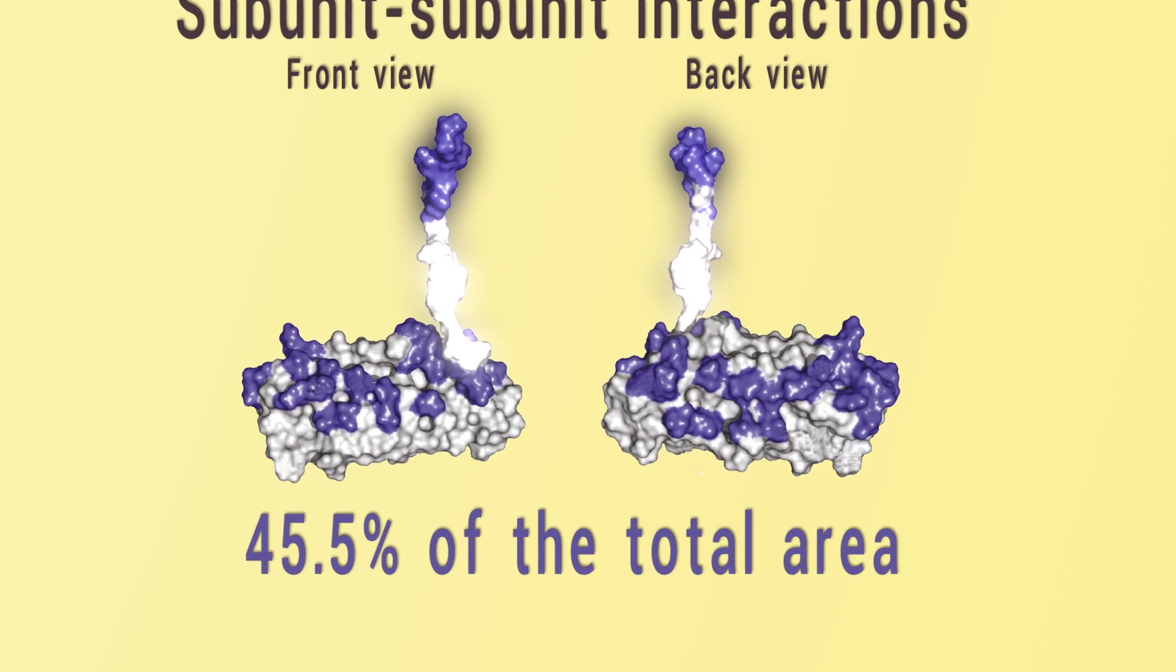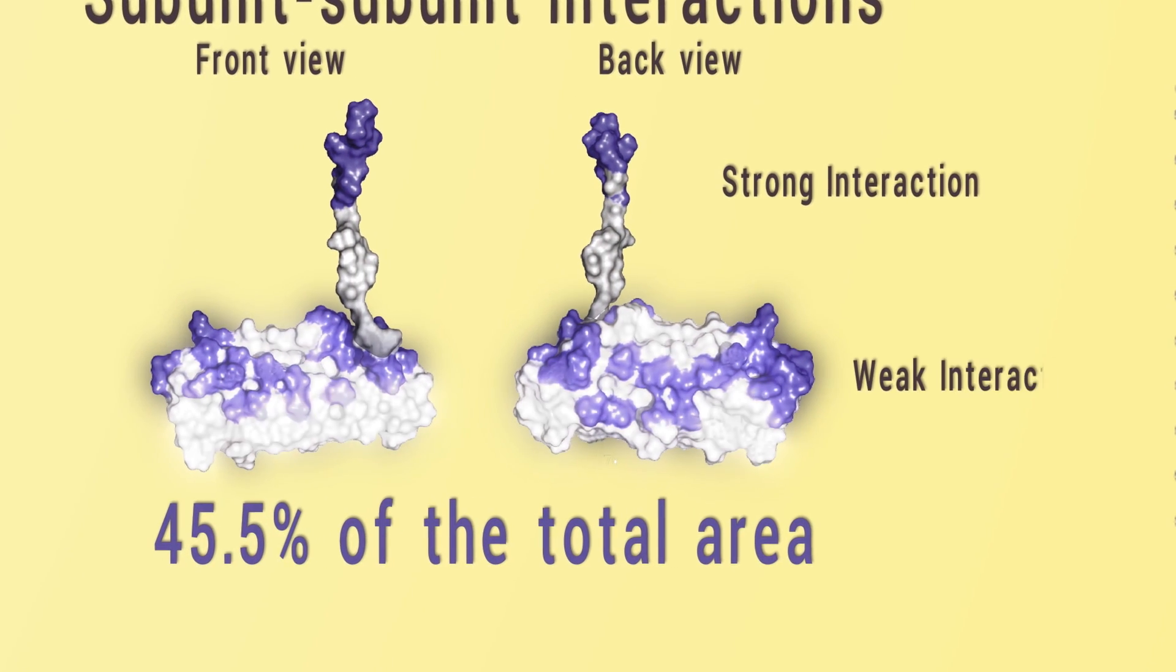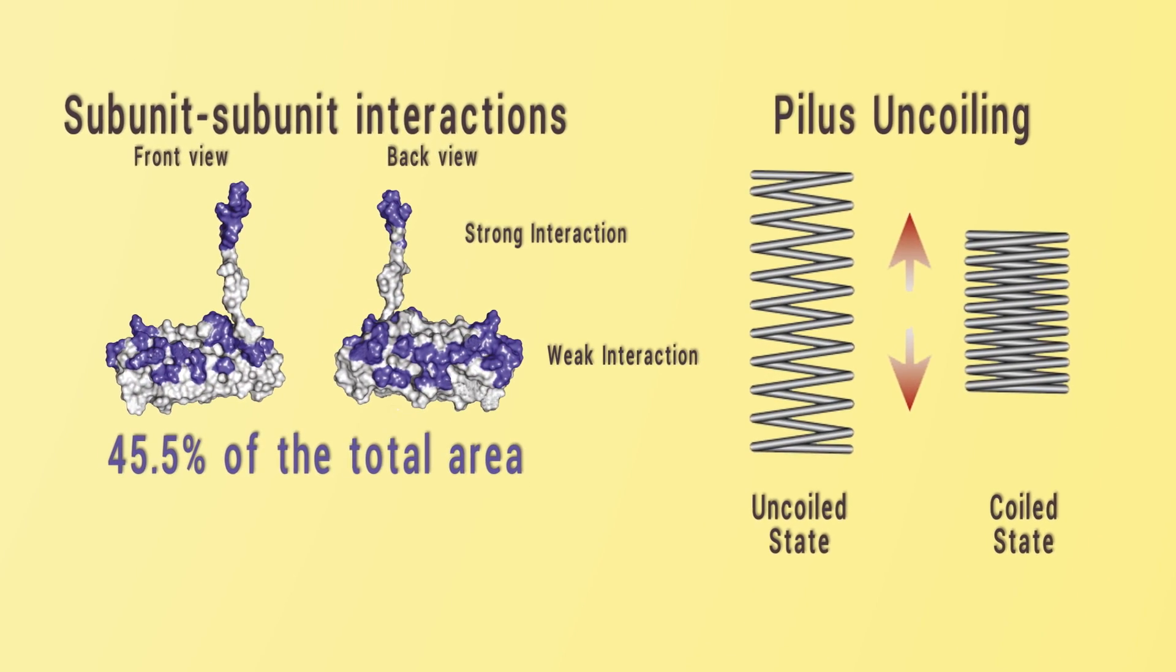While the N-terminal extension mediated interaction is strong, the other interfaces between subunits are weaker, explaining why the rod can uncoil under shear forces without breaking apart.